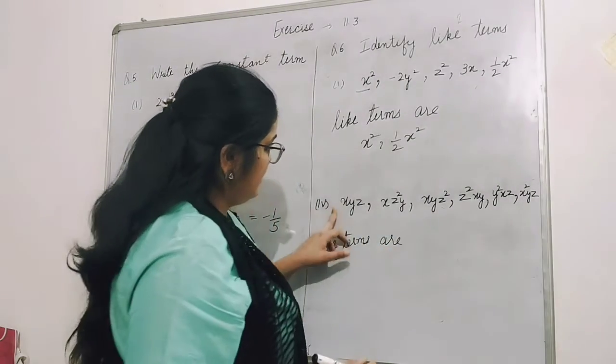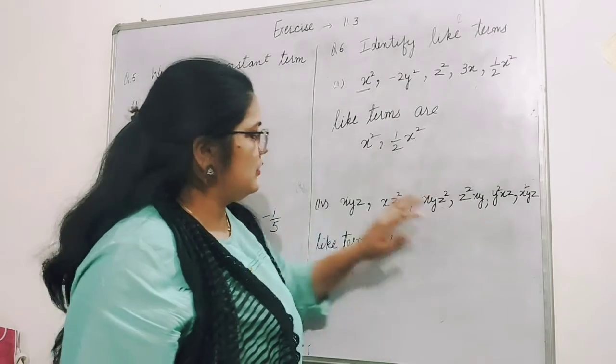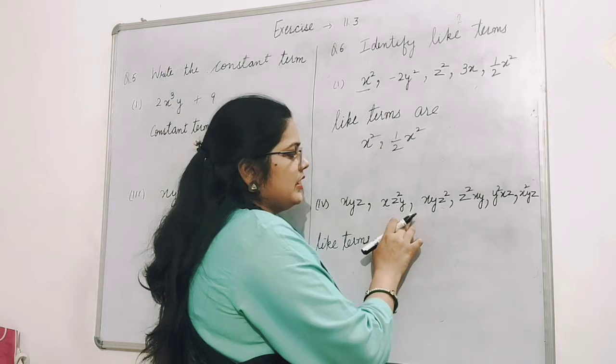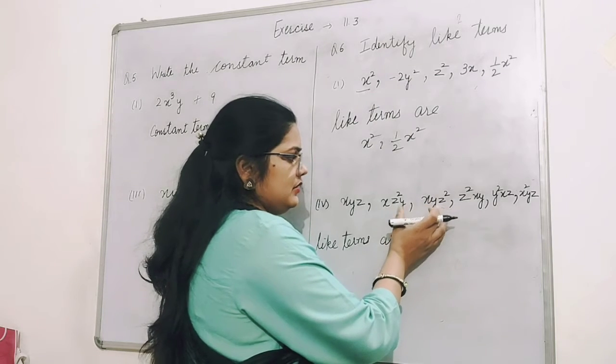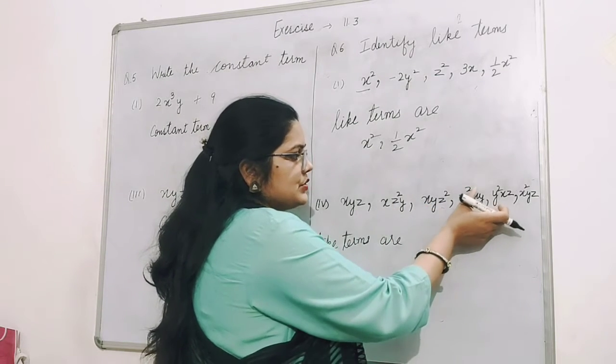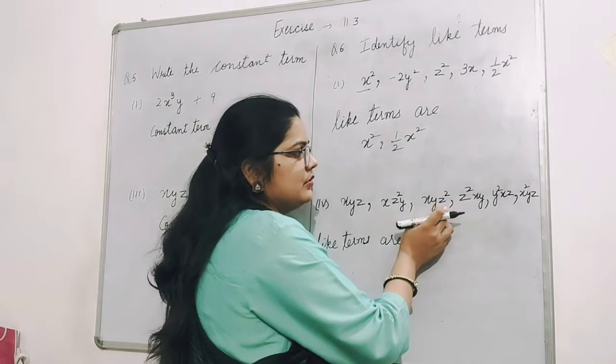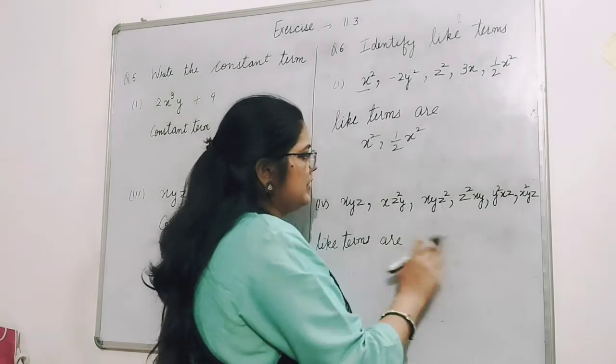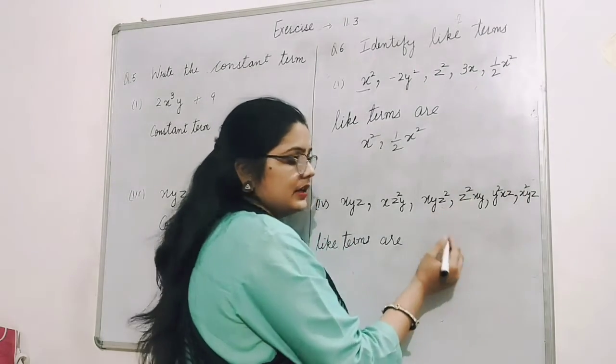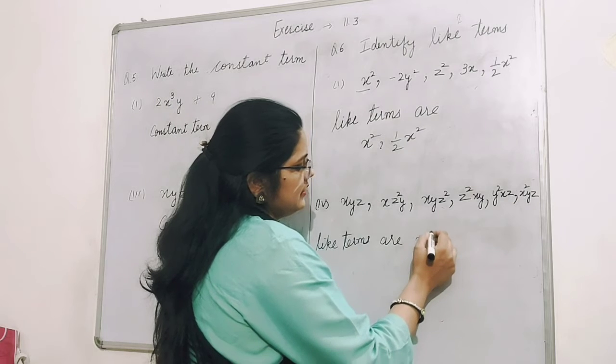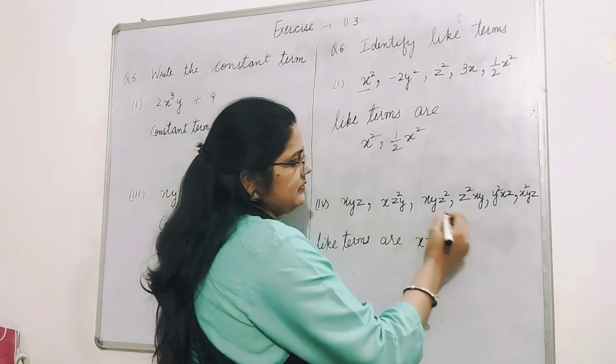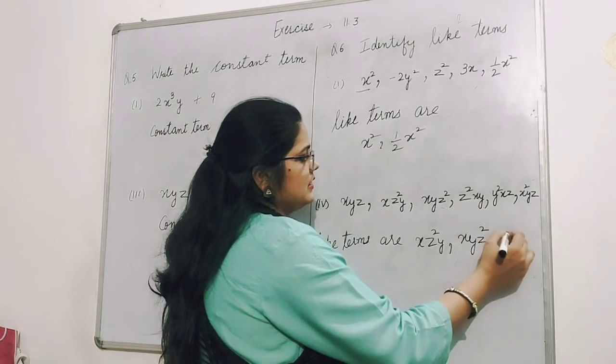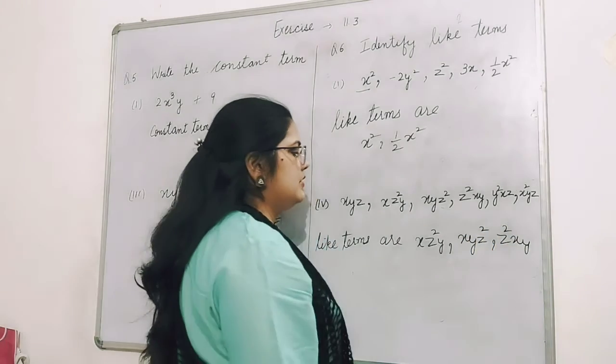The like terms are z²y, z²xy. These two are like - z²xy. Y² is not the same, x² is not the same. These three terms are like: xz²y, then xyz², and z²xy. That's your answer.